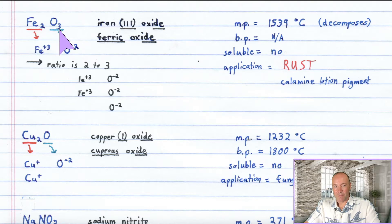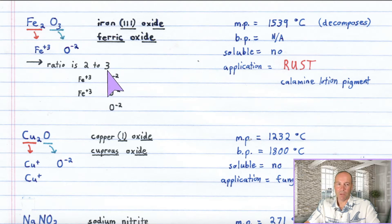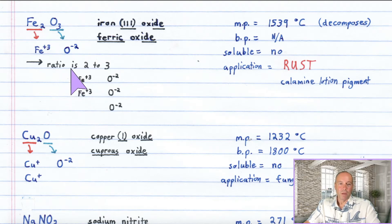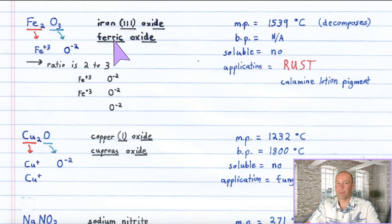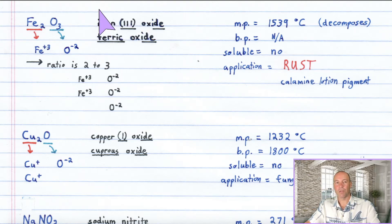Going back to Fe₂O₃: we have three oxygens, and oxygen is always minus two, so that's a total of minus six. With two irons, they must hold a plus six charge combined, so each one gets plus three. If you just see the formula, you can work out that this must be the iron(III) ion — the ferric ion. We could call this iron(III) oxide or ferric oxide. You need to indicate the charge of the iron inside the name using either the systematic or the common name.